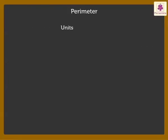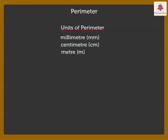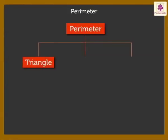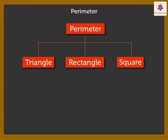The units of perimeter are millimeter, centimeter, meter, or kilometer. Today, we will learn how to find the perimeter of the polygons — triangle, rectangle, and square — using formulas.